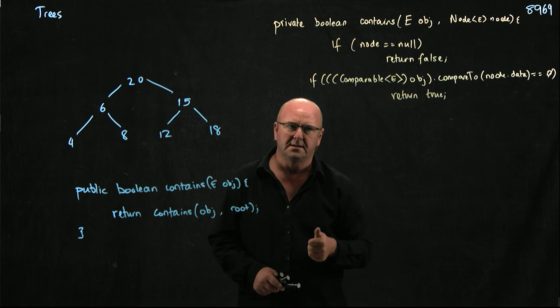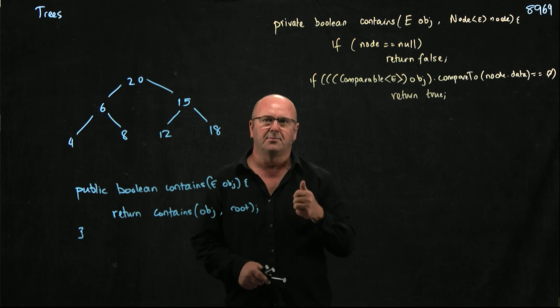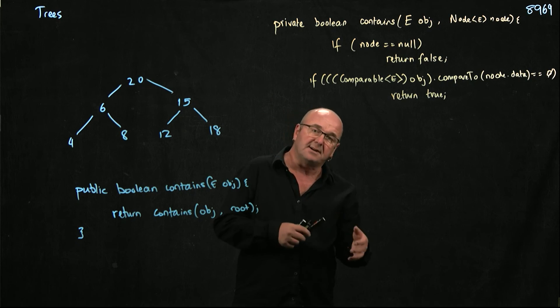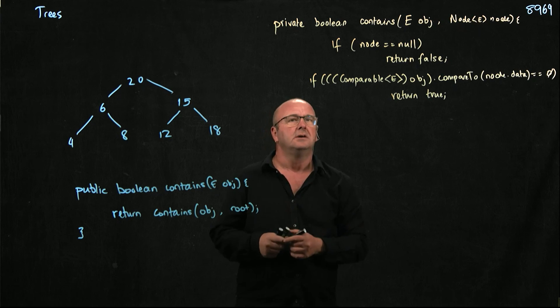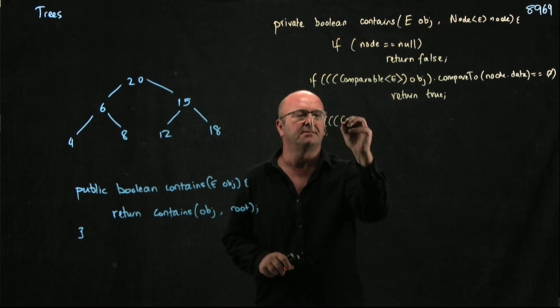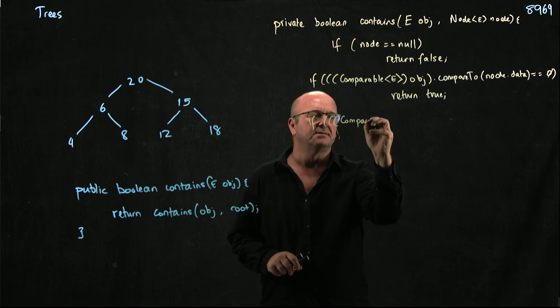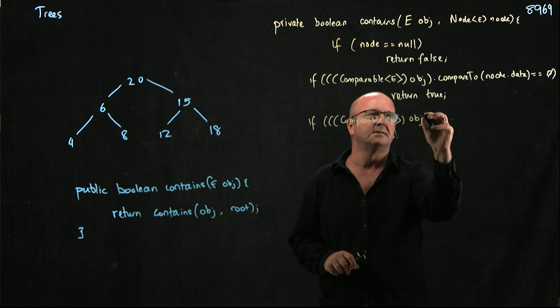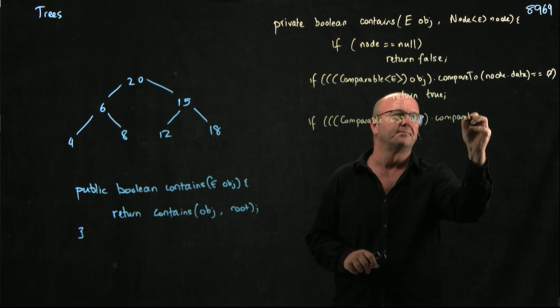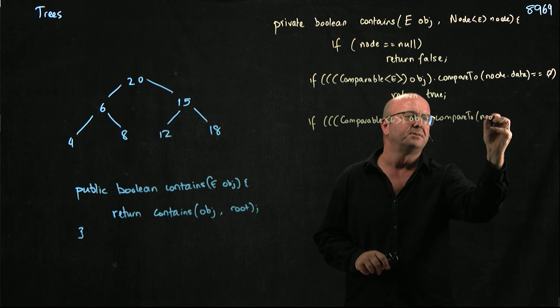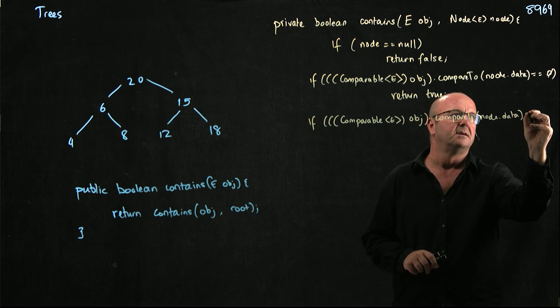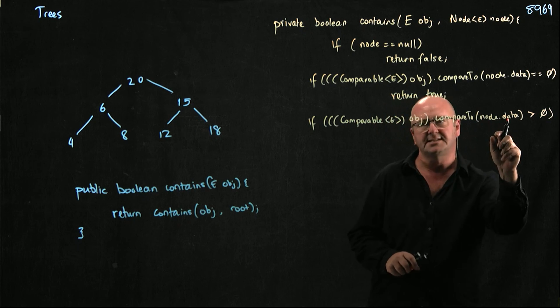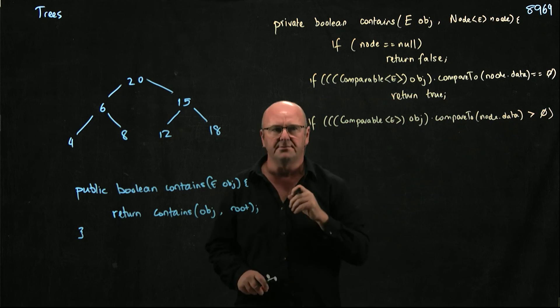So if the node's not null, and we're not at the thing that we're looking for, now we just have to decide. Do we go to the right? Do we go to the left? Which one do we go? So it's basically the same statement that we've already seen. So we're going to use comparable again. return e object.compareTo node.data. And if that's greater than zero, we'll write it the same way. So if object.compareToData is greater than zero, write it the same way.